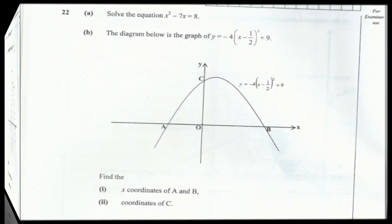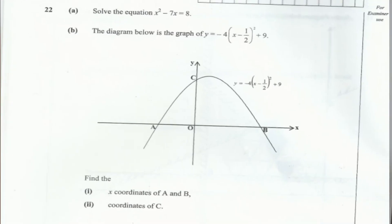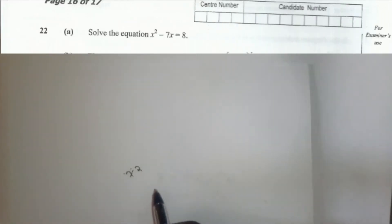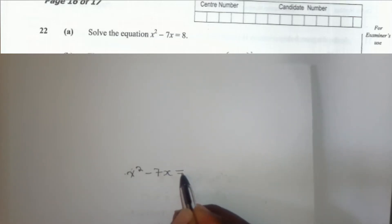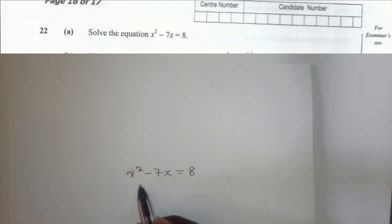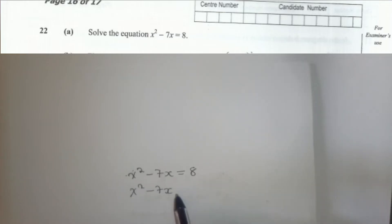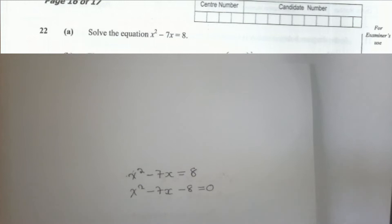We start with question 22, whereby we've been given an equation. We write the equation the way it looks. This equation shows that we're dealing with a quadratic equation. The first thing will be to put it in order.